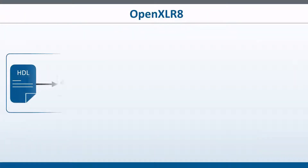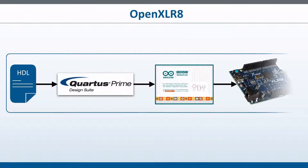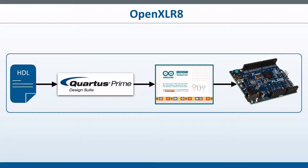The cool thing about it is it doesn't require you to purchase any special hardware or any special FPGA design tools. You can design for Max 10 as your FPGA target using Intel's Quartus Prime Lite, which is free. And the methodology that we've created actually allows you to upload your new image to the FPGA through the Arduino IDE, so you don't need any kind of special JTAG hardware or USB blaster or anything like that. So that's Open Accelerate.